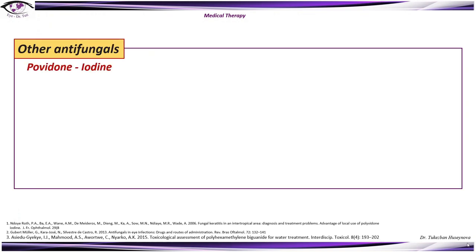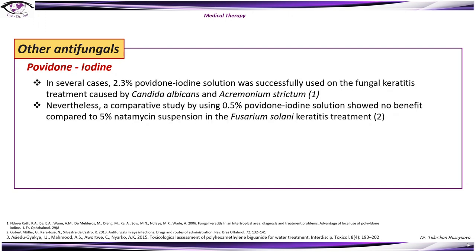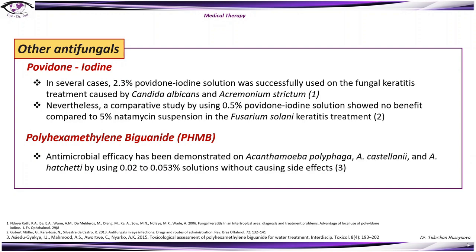Other antifungals include povidone-iodine; in several cases, a 2.3% solution was successfully used in fungal keratitis caused by Candida albicans and Acremonium strictum. However, a comparative study using 0.5% solution showed no benefit compared to 5% natamycin suspension in Fusarium solani keratitis treatment. Polyhexamethylene biguanide (PHMB) has demonstrated antimicrobial efficacy against Acanthamoeba infections using 0.02 to 0.053% solutions without causing significant side effects.